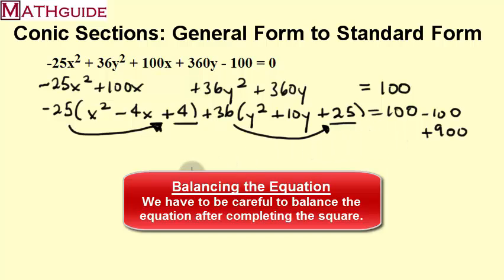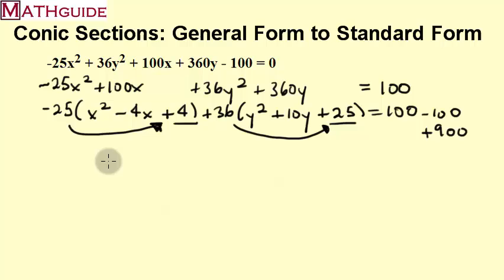Now that I've balanced my equation, I'm going to clean up here. First of all, I created perfect square trinomials. Now I'm going to clean up the right side. The 100 minus 100 cancels, so we're left with just 900. So what is this as a perfect square? Well, it's always half the middle term. So it's (x - 2)². Here, half the middle term is 5, so (y + 5)². I just created perfect squares.